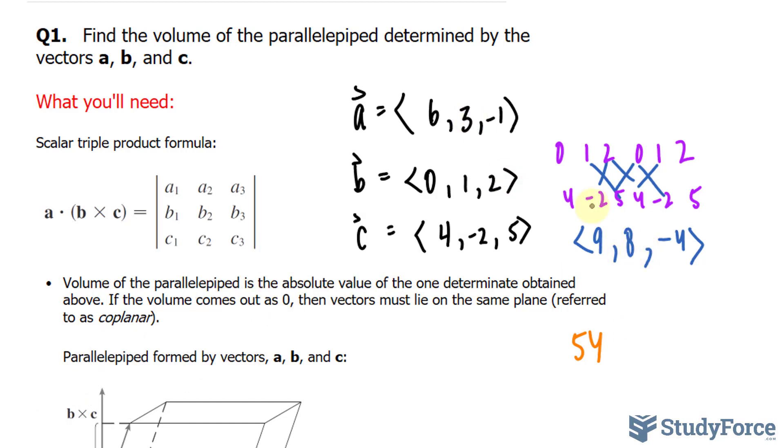Plus 3 times 8, that's 24. Plus negative 4 times negative 1, that's positive 4. 54 plus 4 is 58 plus 24 is 82. So the parallelepiped has a volume of 82 units cubed.